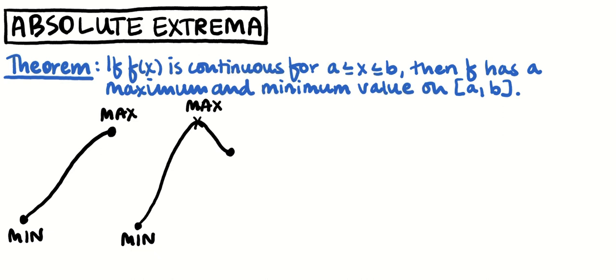Now the reason that this is true is really the ways that you can draw a function and not have a minimum or a maximum value. Let's say it was a closed interval that wasn't quite continuous. Let's say we had a removal discontinuity. This is not continuous and there is no max. Now a lack of continuity won't guarantee that you won't have a maximum. We still have a minimum right here, an absolute minimum on that closed interval.